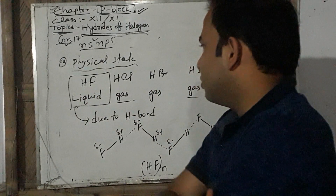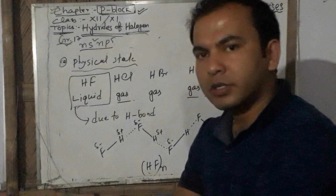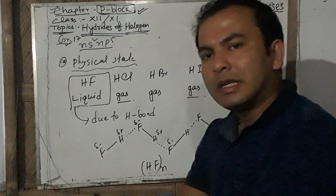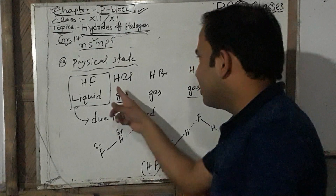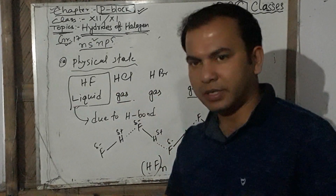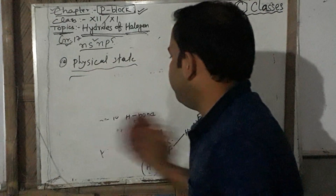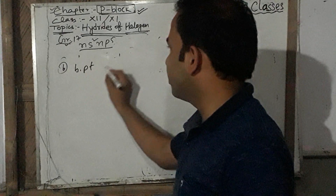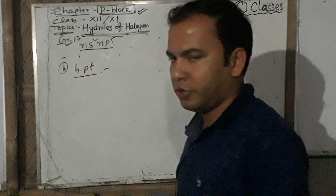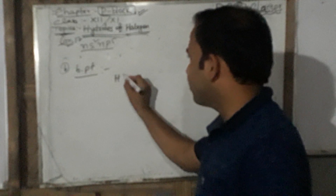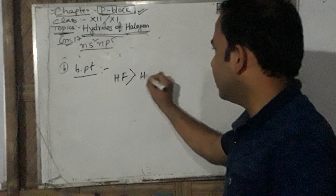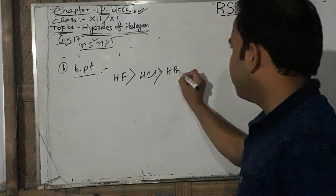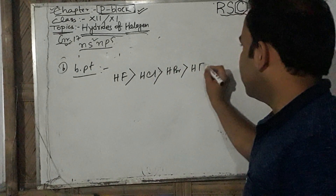This is an important exam question: why is hydrofluoric acid a liquid while HCl, HBr, and HI are gases. Regarding boiling points: HF has the highest boiling point due to hydrogen bonding, followed by HCl, then HBr, then HI in increasing molecular mass order.